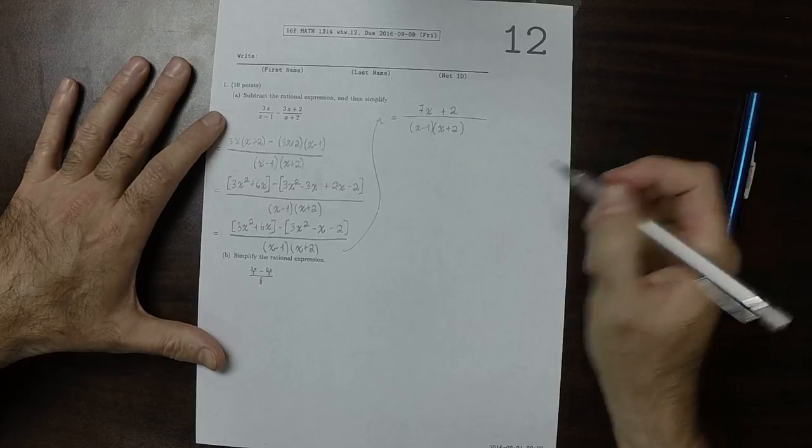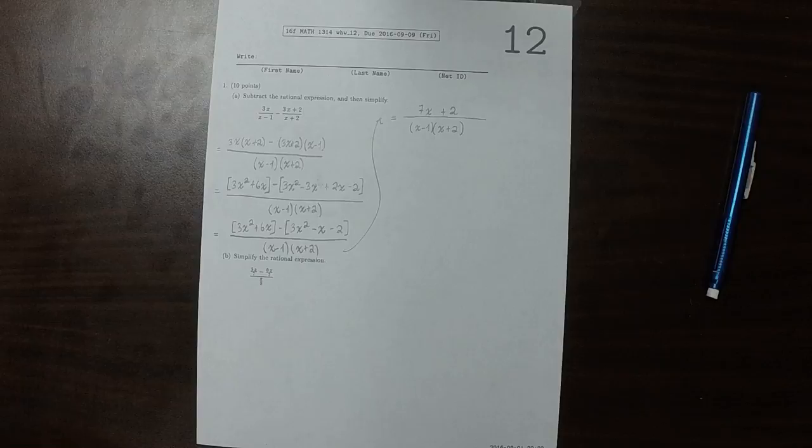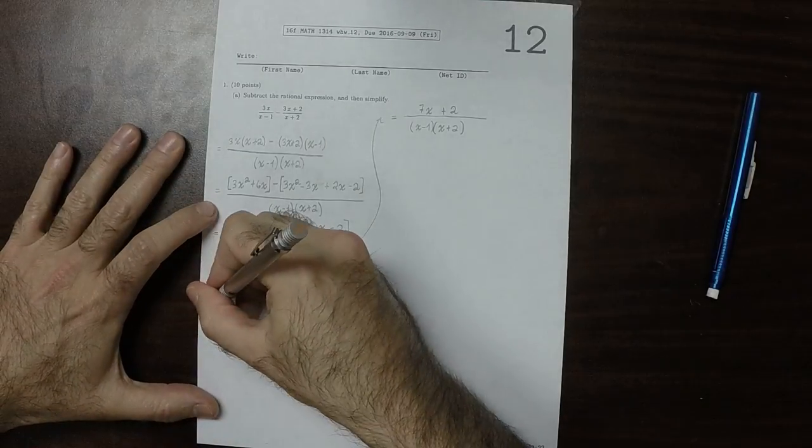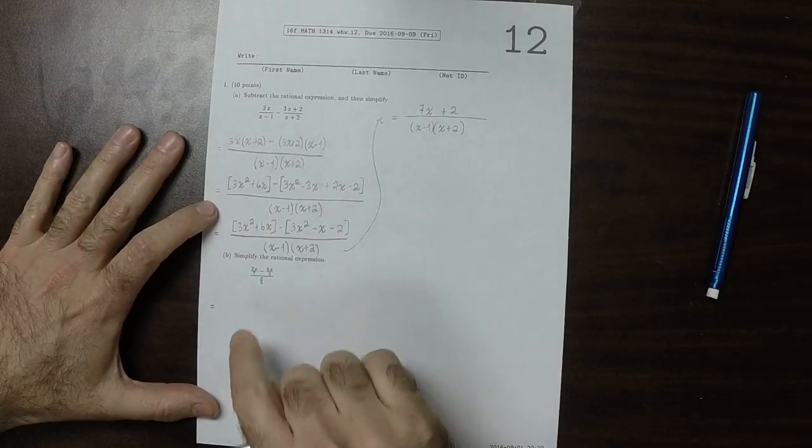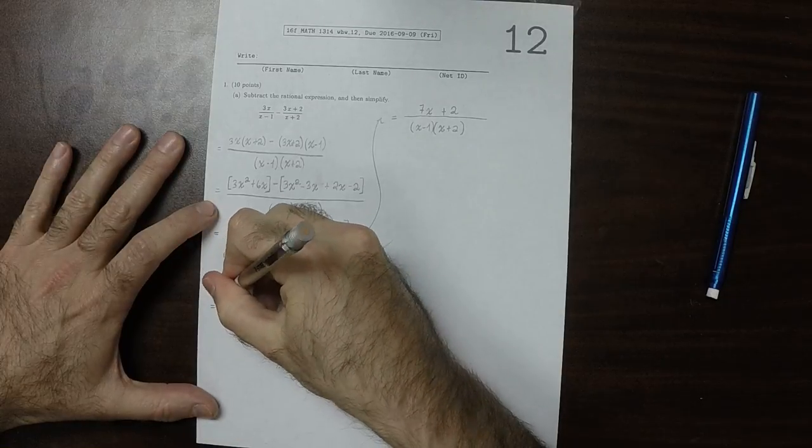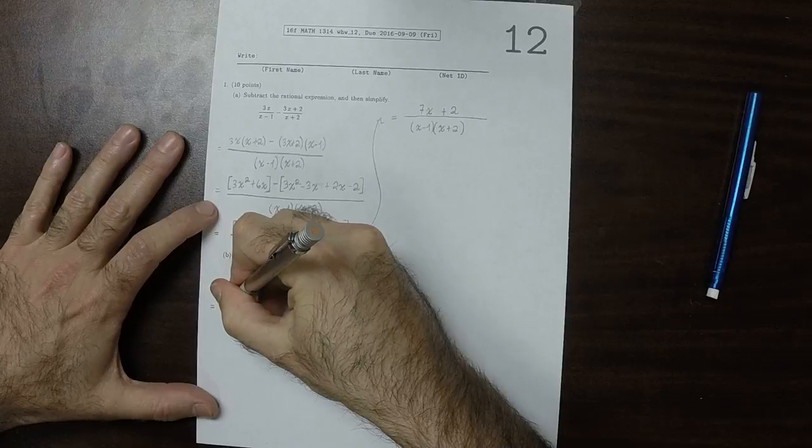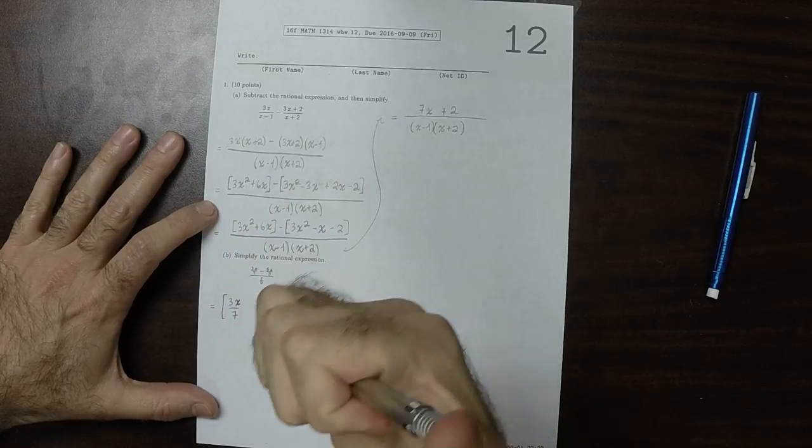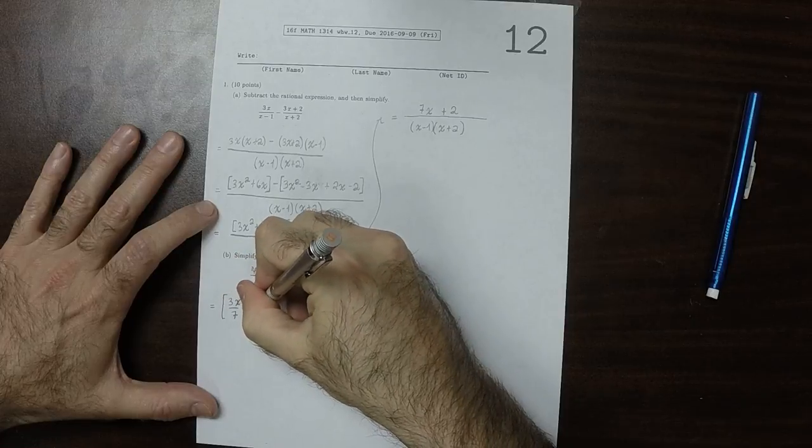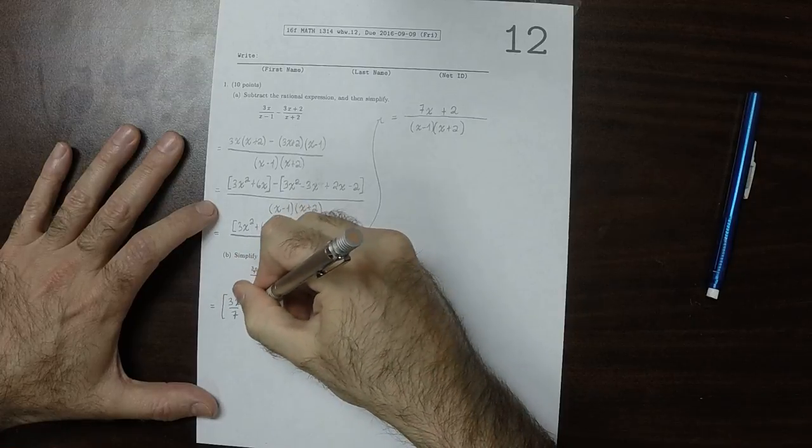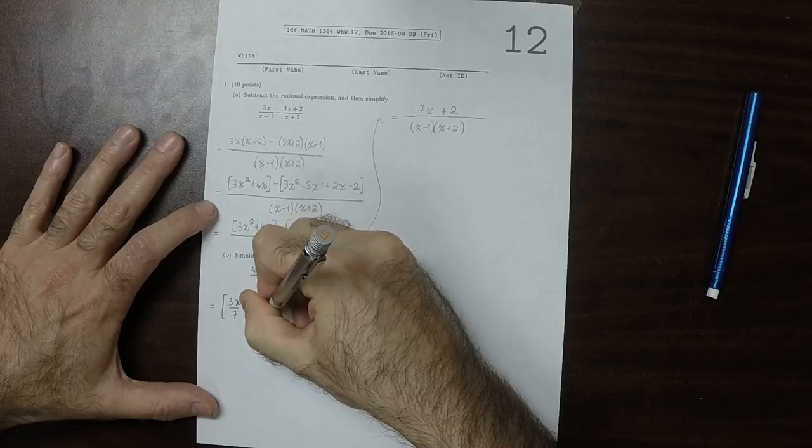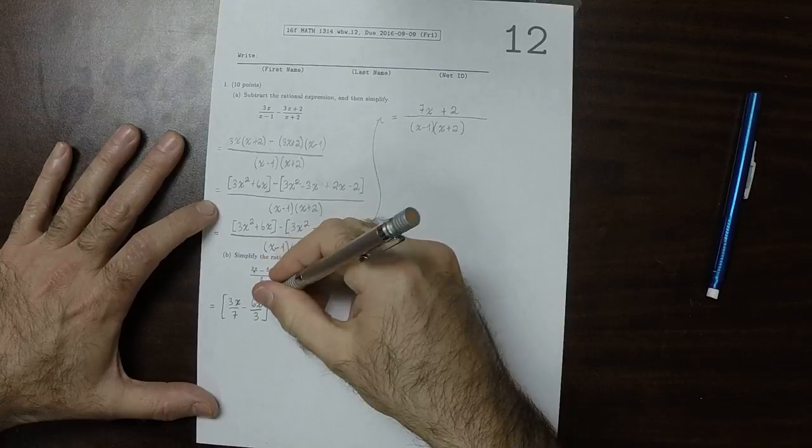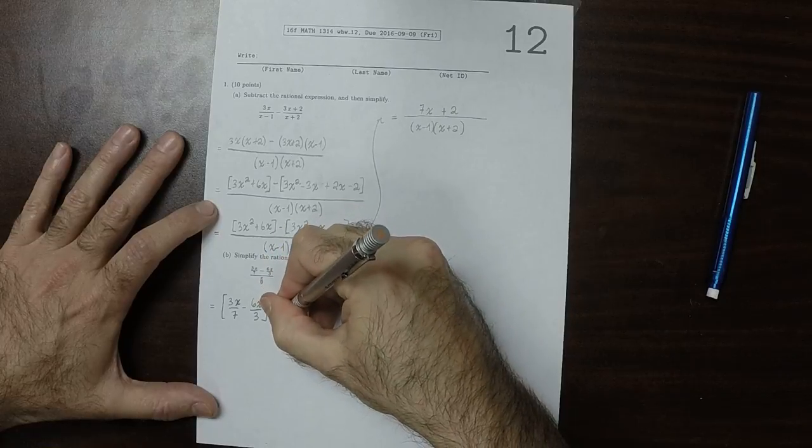In part B question, the first thing I'll observe is that we're dividing by a fraction. So this is the same as 3x over 7 minus 6x over 3. And then instead of dividing by this fraction, I'll multiply by its reciprocal, which is 9 over x.